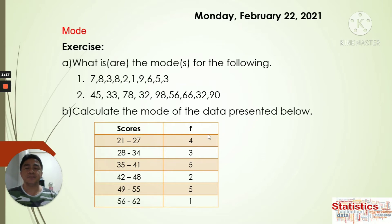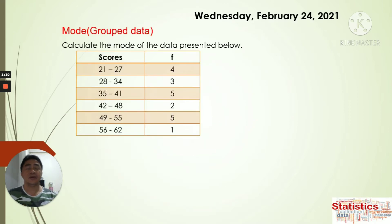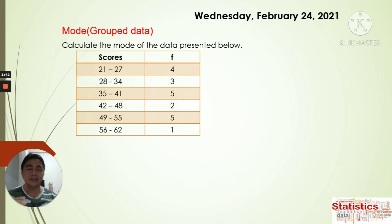For Letter B, we already have the table and we're going to figure out the mode for grouped data. We have the table again and we're going to look at the frequency. We need to find the modal class by looking at the most frequent frequency. We can see that there are two classes having the same frequency, which is 5.